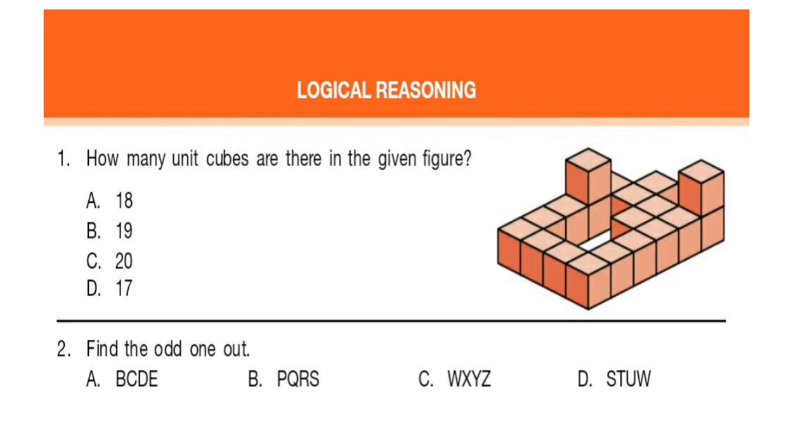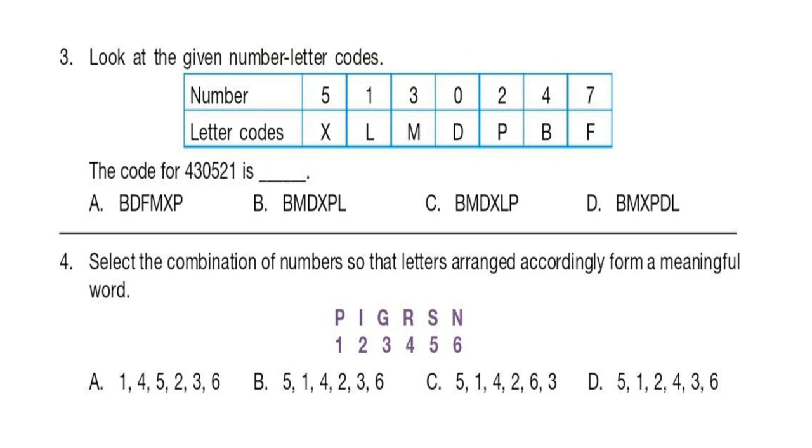Question 2: Find the odd one out. Look at the options carefully. Question 3: Look at the given number letter codes. Now table is given here. Number and letter codes are given.